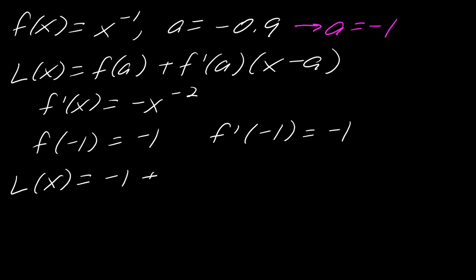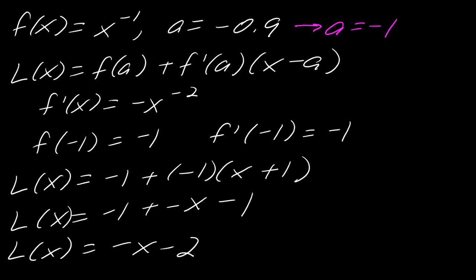So now I can go ahead and plug that information into my linearization. So this will be negative 1 plus negative 1 times x plus 1. So my linearization in this case will be negative 1 plus negative x minus 1. So if I format all of this, this comes out to negative x minus 2.